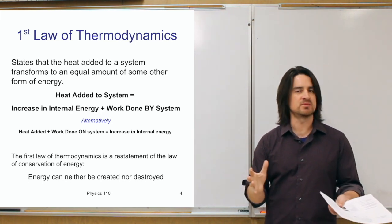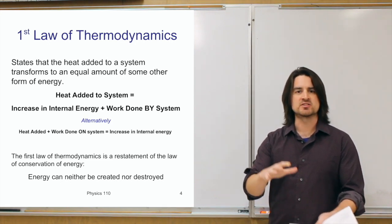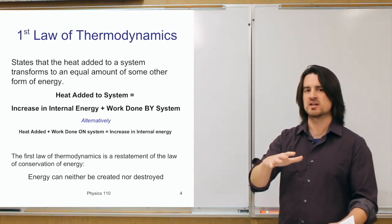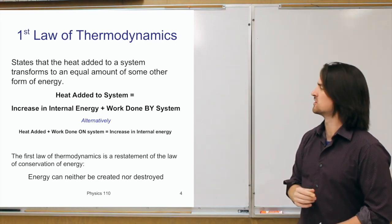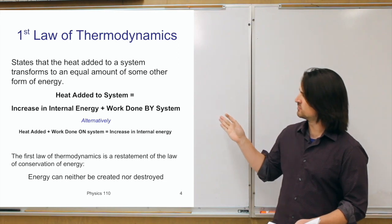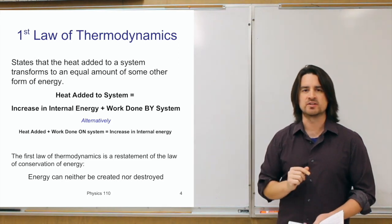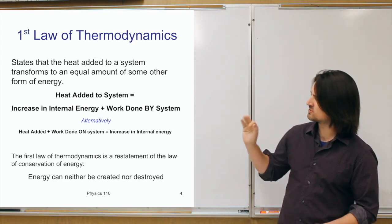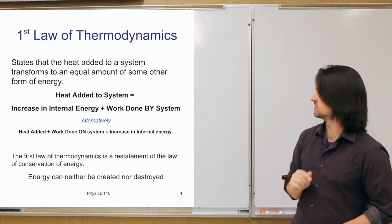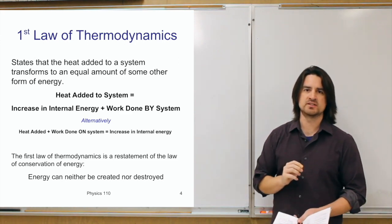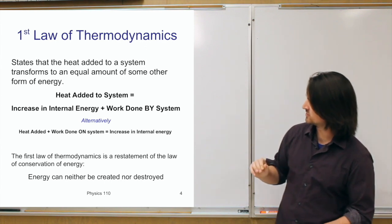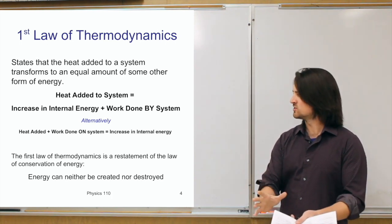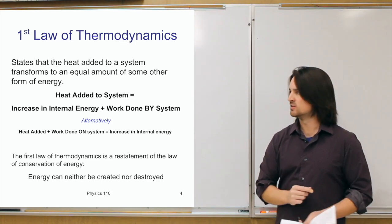Work done by a system — the simplest example is when a gas expands and pushes against something. Work is a force being applied over a distance, so when the gas expands it pushes something else to move it, doing work. An alternative form of this equation puts the work on the other side: the heat added to a system plus the work done on the system equals the increase in internal energy. Both forms are essentially statements about conservation of energy — adding heat goes to increasing internal energy or doing work by the system.